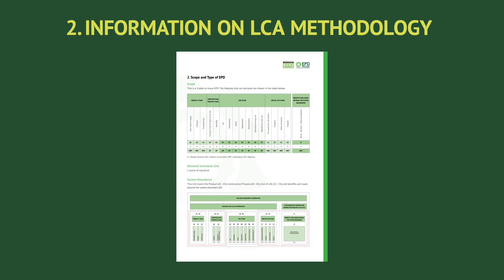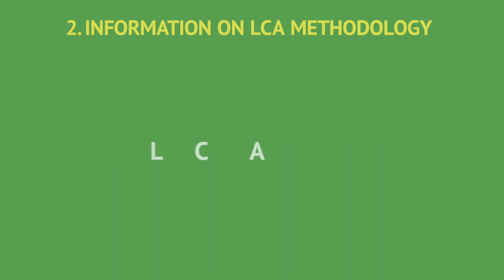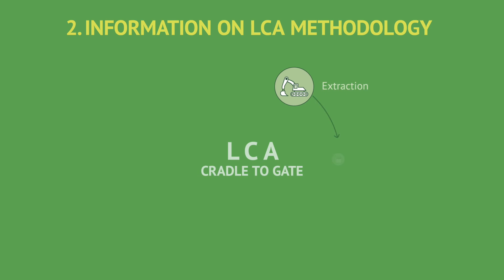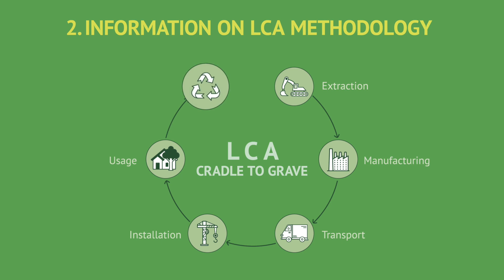As you turn the page, you will find further information about the life cycle assessment methodology employed. This section shows the scope of the LCA, defining the specific life cycle stages covered by the assessment. A life cycle assessment (LCA) can be conducted in various forms, such as cradle-to-gate or cradle-to-grave. A cradle-to-gate LCA focuses on declaring the environmental impacts that occur during the production phases, up to the point where it leaves the factory gate. A cradle-to-grave LCA includes the entire life cycle of a product and declares all the impacts associated with its different stages.